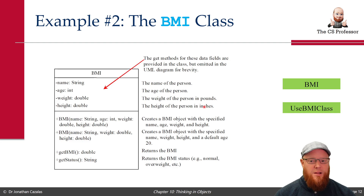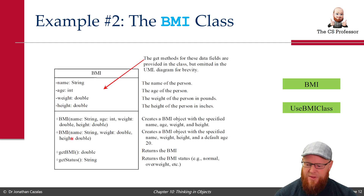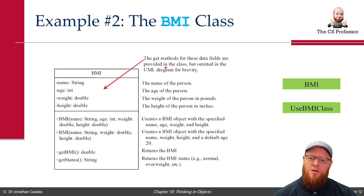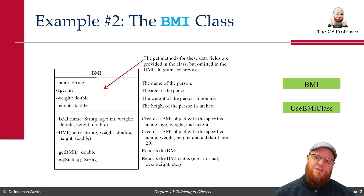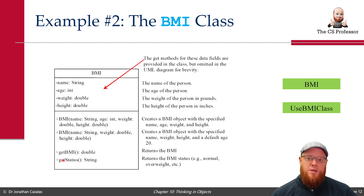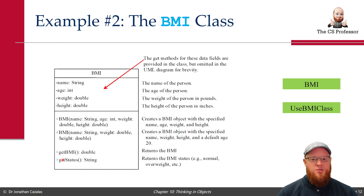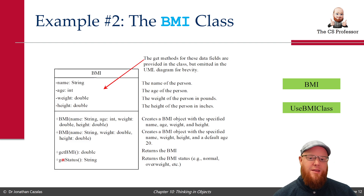Here is our BMI class. We have a name, age, weight, and height. We have two constructors, and a variety of getters and setters — omitted from the UML for brevity. We have get BMI and get status. Get BMI returns the BMI of this particular patient, and get status returns what that BMI means: normal weight, overweight, underweight, etc. We want to code up BMI objects and get the BMI and status without looking at the black box — just like we did in the loan example.